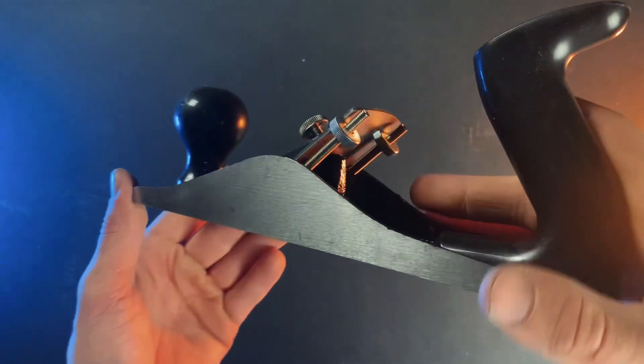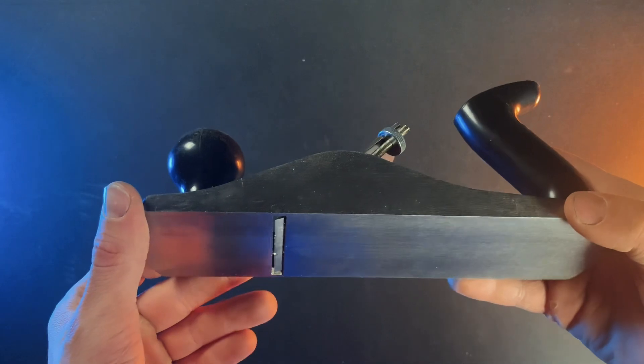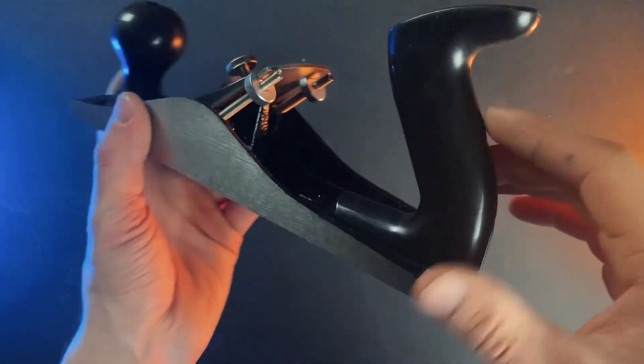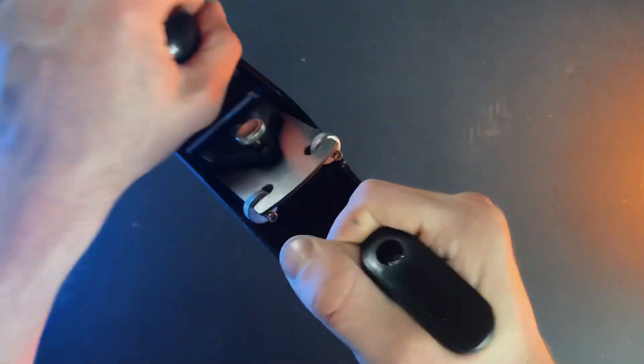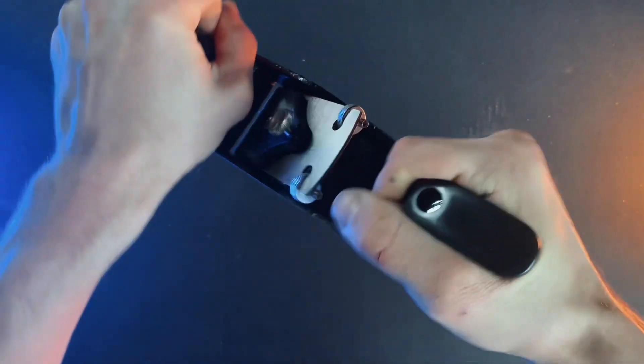Now this is a decent sized hand plane at about 10 inches long and it feels pretty robust. The body is made from cast iron and the two handles are both a hard plastic and they're secured on surprisingly well.